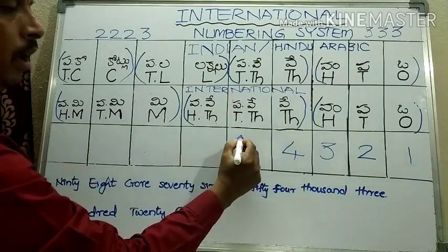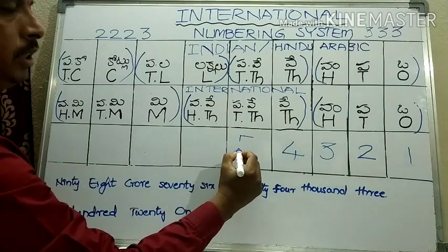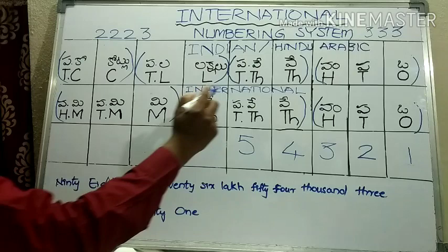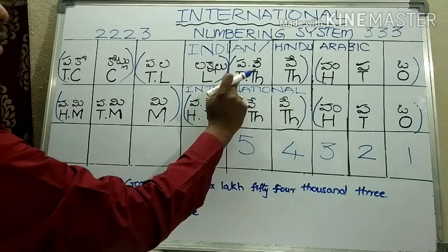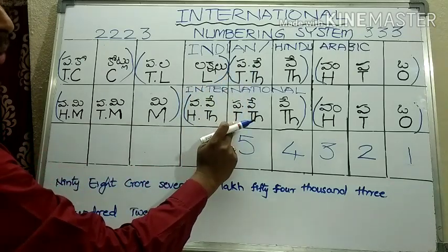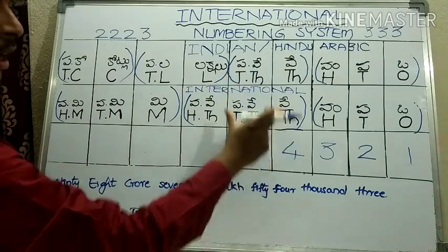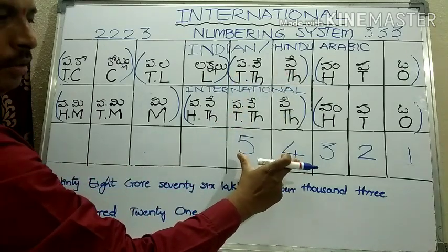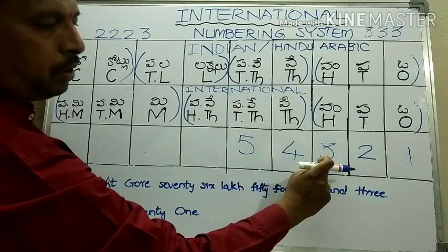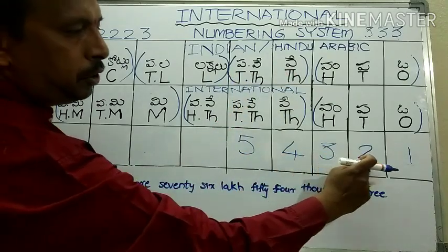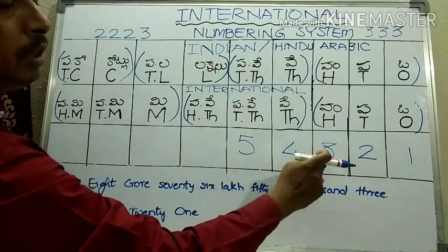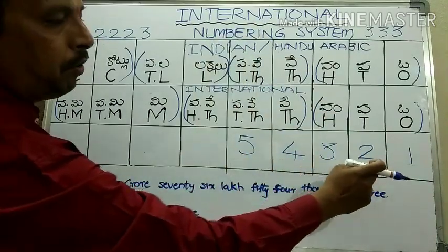Next, I write 5 in the ten-thousands place. In the Indian system 54,321 and in the international system also 54,321. Both are written the same way up to this point because the grouping for the first five digits is identical in both systems.